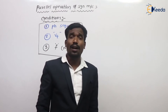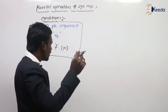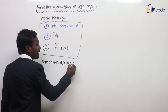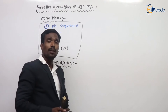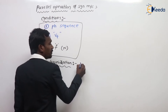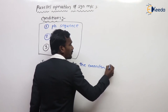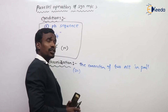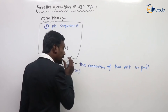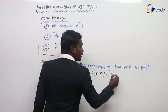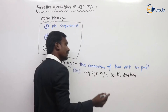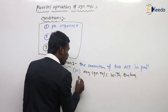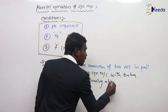Now we have one important word: synchronization. What is synchronization? Synchronization is the connection of two alternators in parallel, or the connection of any synchronous machine — synchronous motor or synchronous generator — with the bus bar.